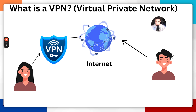Somebody without a VPN connecting directly to the internet — all of their traffic will be viewable by the internet service provider or anybody listening on that network. Things such as browsing websites, shopping, and sending messages can be exposed. With a VPN, the user connects to the VPN first, then the VPN acts as a protective shield. Instead of data going directly to the internet, it passes through the VPN, which encrypts it and hides that traffic, making it very difficult for anyone to see what they're actually doing online.